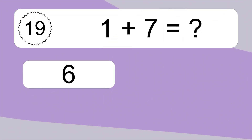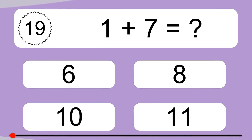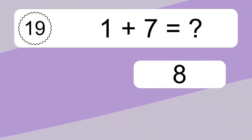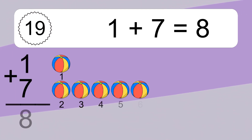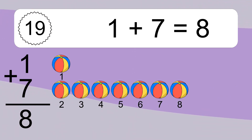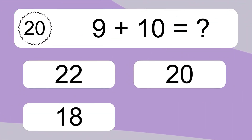1 plus 7 equals what? 1 plus 7 equals 8. Let's count it. 1, 2, 3, 4, 5, 6, 7, 8.